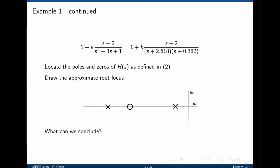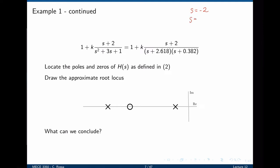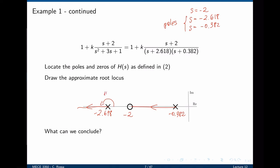We can now find the zeros and poles of the transfer function. The zero is at s = -2, and the poles are at s = -2.618 and s = -0.382. Locating these poles and zeros in the s-plane, the root locus exists to the left of an odd number of poles and zeros. In this case, the root locus exists between the zero and the pole at -0.382, and to the left of -2.618. We see an excess of one pole, giving an asymptote going to negative infinity at an angle of -180 degrees. This pole goes to the zero, and this pole goes to negative infinity.